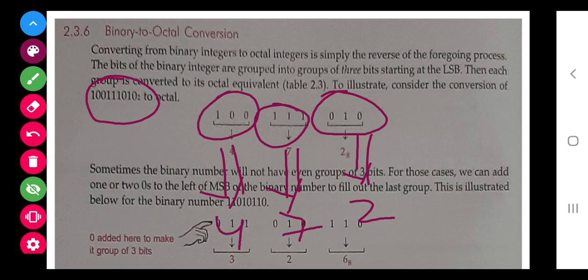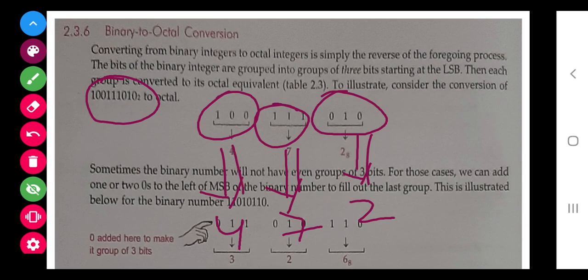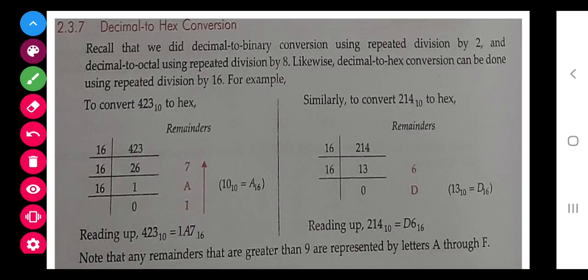You have already done the decimal conversion of binary. Now decimal to hexadecimal. I have told you previously in a previous video also: whenever we have to go from decimal to hexadecimal, then we have to divide. So the same they have done in this example.